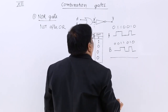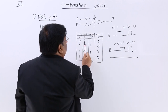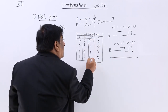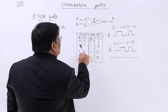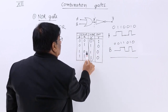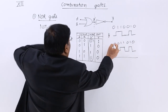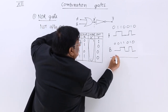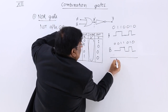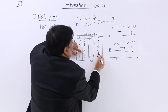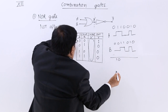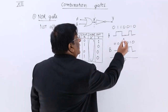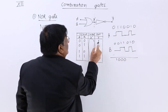Now for the result: the truth table of the NOR gate gives us final outputs 1, 0, 0, 0, 1, 0, 0, 0 — that is, when A=0 and B=0, output is 1; when either or both inputs are 1, output is 0. When A=0, B=0, gives 1; when A=1, B=0, gives 0; when A=1, B=1, gives 0; when A=0, B=1, gives 0; when A=0, B=0 again, gives 1.